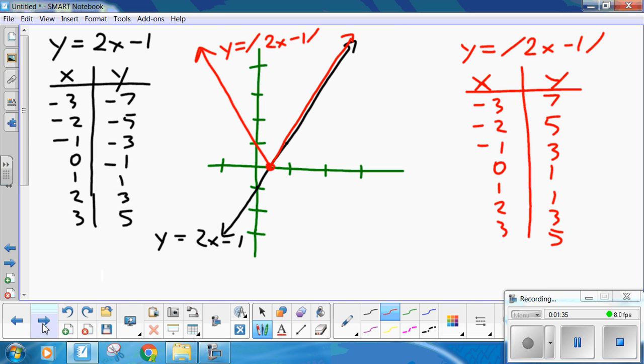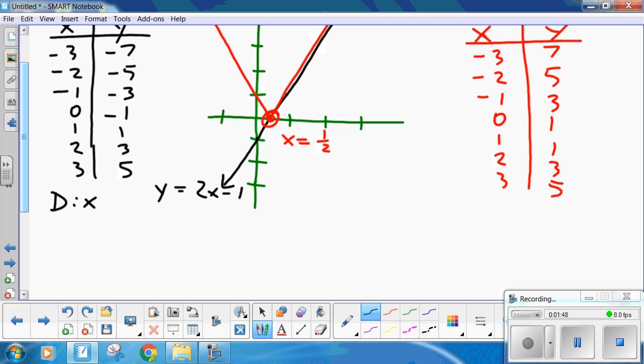Now, this gives you the critical point of x equals 1 half. Now, here, domain, x is all real, range, y is all real also. And what do we have over here? The same restrictions. Domain is x is all real, and the range, y is greater than or equal to 0.